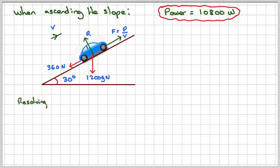OK, so if we now resolve along the slope, we're going to have P over V, so we're going to have 10,800 over V, which I need to find. Against it, it's going to be 360.